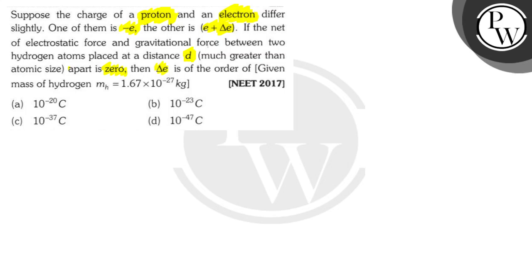then Δe is of the order of, and there are four options given. They have also given the mass of hydrogen m_H = 1.67 × 10^-27 kg.